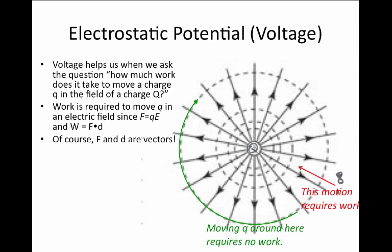So there are going to be different circumstances for when there's an amount of work done and when there isn't. Moving in toward the capital charge Q will cause one sign of work, and moving out away from it will cause another form of work. Work is related to potential energy as work equals minus delta U — the change in potential energy.